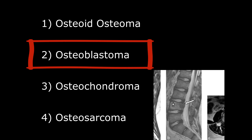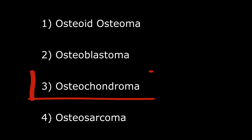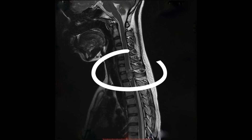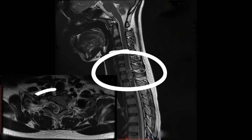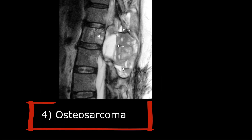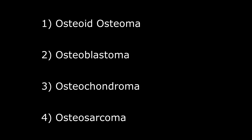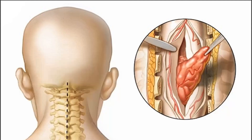Osteochondroma is a tumor of the cartilage — here you can see a sagittal and axial view. Osteosarcoma is common in males, it is a malignant tumor, very aggressive, and radiation is ineffective. All four of these tumors occur in younger individuals, but older people with Paget's disease can also develop sarcoma.